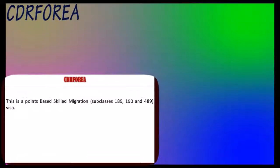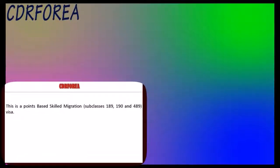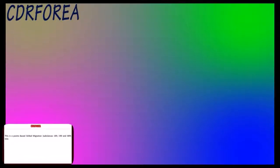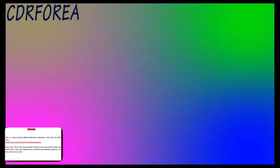This is a points-based skilled migration covering subclasses 189, 190, and 489 visa. For details, please click on the video. Do you want to know how to calculate the points for a permanent visa for Australia? Please click on the video.